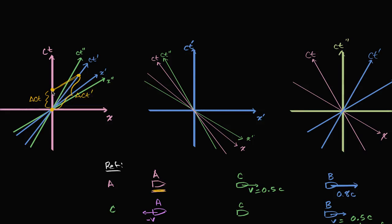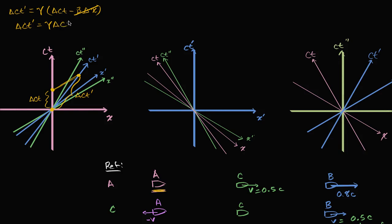The change in ct-prime looks longer, but we have to remember the scales change depending on the relative velocities. We can verify algebraically using the Lorentz transformation: change in ct-prime equals the Lorentz factor times the quantity (change in ct minus beta times change in x). Since these two events are stationary in our frame of reference, our change in x is zero, so that term drops out. Change in ct-prime equals gamma times change in ct.